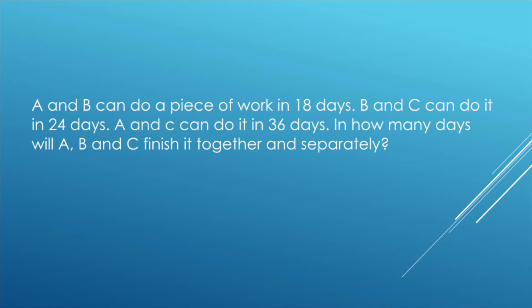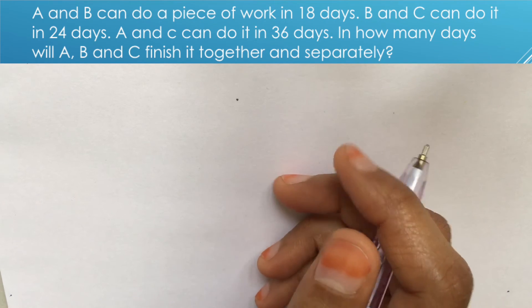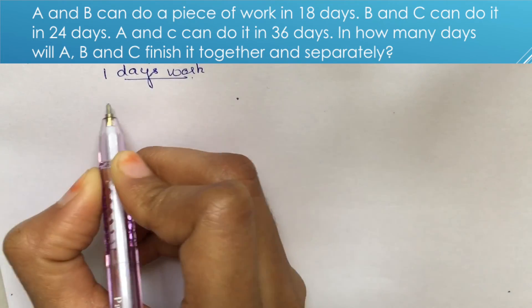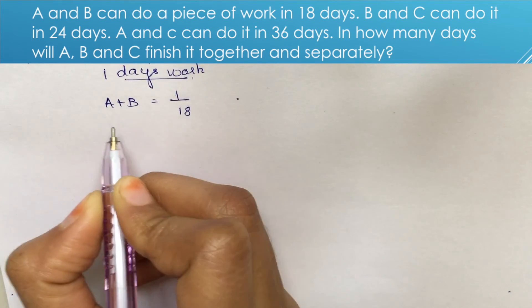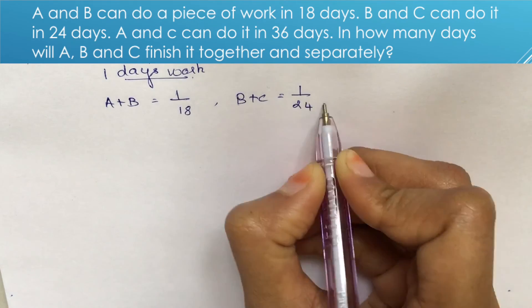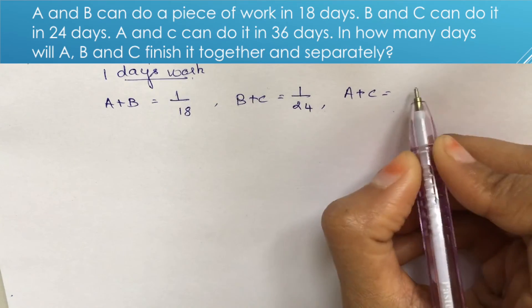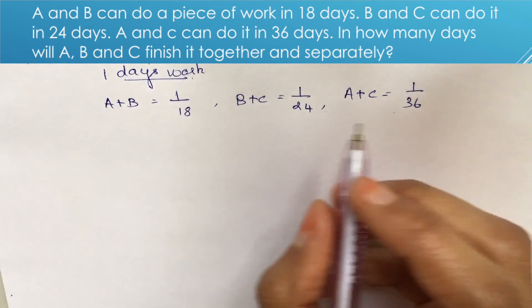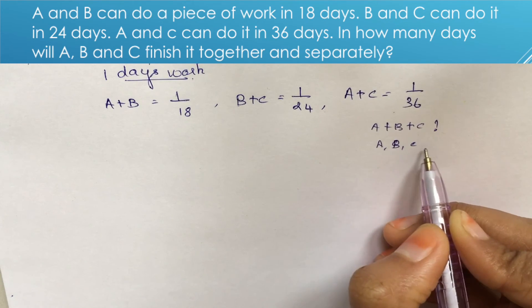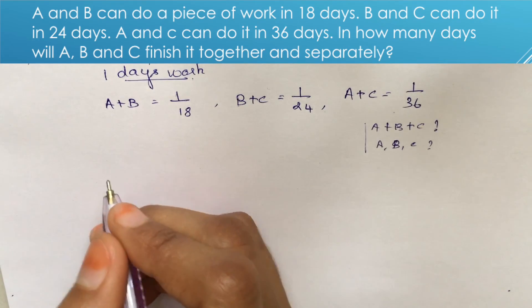Next problem: A and B can do a piece of work in 18 days, B and C can do it in 24 days, and A and C can do it in 36 days. In how many days will A, B, and C finish it together and separately? We take 1-day's work: A+B = 1/18, B+C = 1/24, A+C = 1/36. We have three equations.